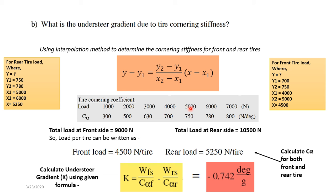Since 4,500 Newton falls between 4,000 and 5,000 Newton in the table, we must use interpolation. The interpolation formula is: y − y1 = [(y2 − y1)/(x2 − x1)] × (x − x1), where x represents the load and y represents the cornering stiffness. This method is used to determine the cornering stiffness for both the front and rear tires.